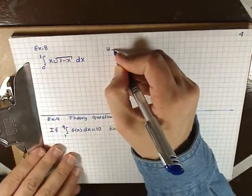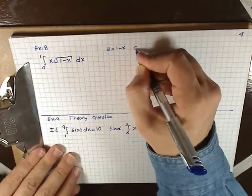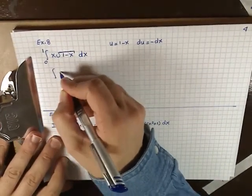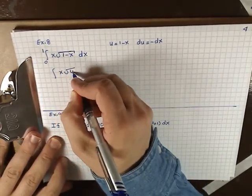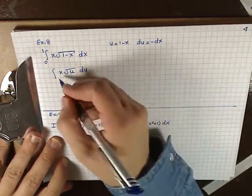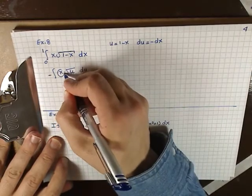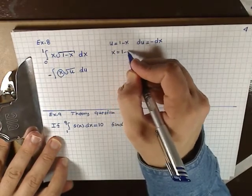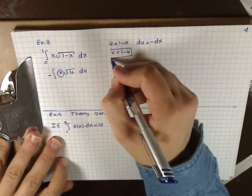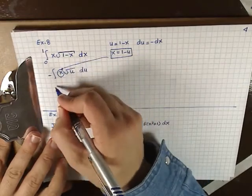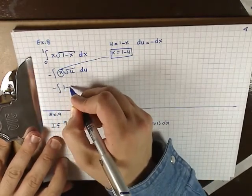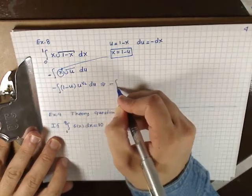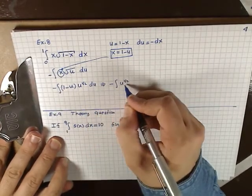Let's look at another example: the integral of x·√(1 − x) dx. We let u equal the inside function, u = 1 − x, so du = −dx. We rewrite this as the integral of x·√u, and since dx = −du, we put the minus sign outside. We can't have x's and u's together, so we solve for x in terms of u: from u = 1 − x, we get x = 1 − u.